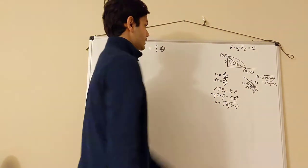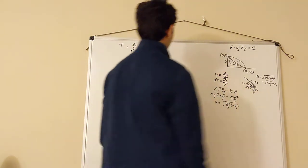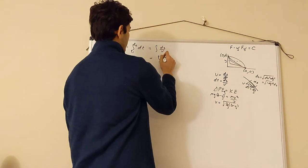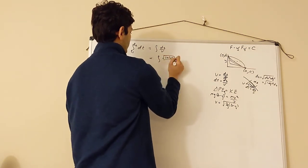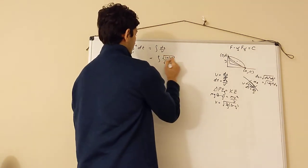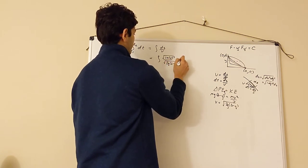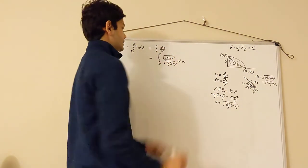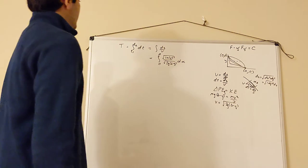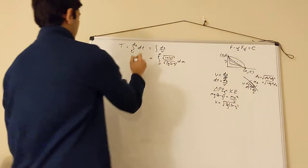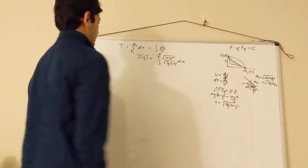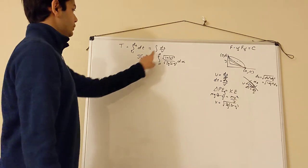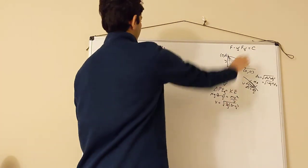We can now use the formula for velocity and the formula for arc length and put them back into the integral. We get that t equals the integral from 0 to a of the square root of (1 + y'²) over the square root of 2g(b − y), dx. We can call this functional J[y], as we've been calling our other functionals. Now we have J[y] expressed in this form, and we want to apply the Beltrami identity.